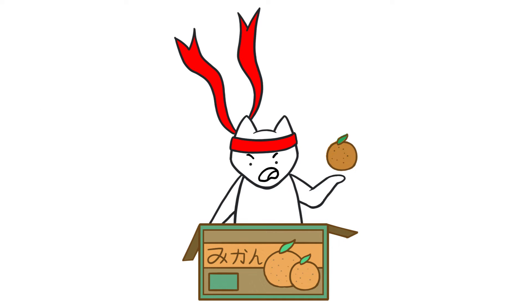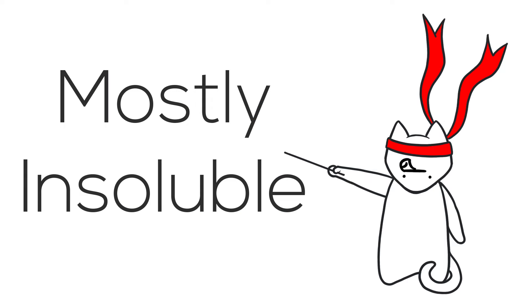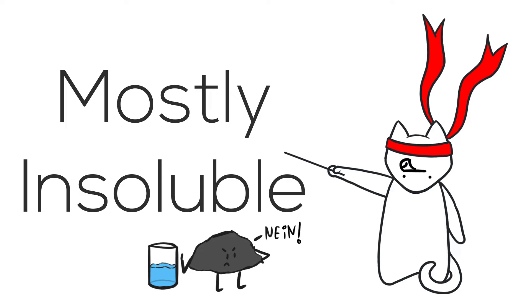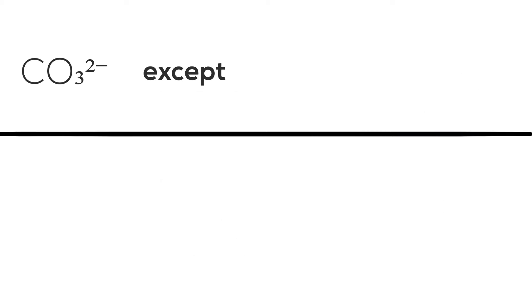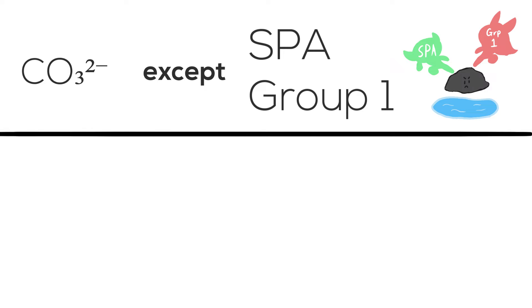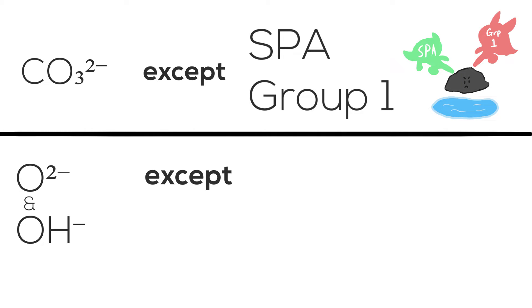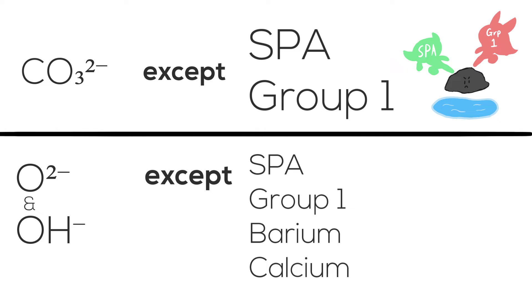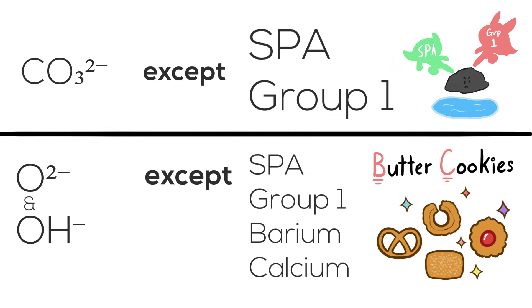Now let's talk about the third and last category: the mostly insoluble salts. Most salts under this category refuse to become soluble — just think of them as really stubborn rocks. But as with all things, there are always exceptions. All carbonates are insoluble, except for SPAR and Group 1 elements in the periodic table. All oxides and hydroxides are insoluble, except for SPAR and Group 1 elements, with two extra elements: barium and calcium. Remember with the mnemonic: 'butter cookies.'